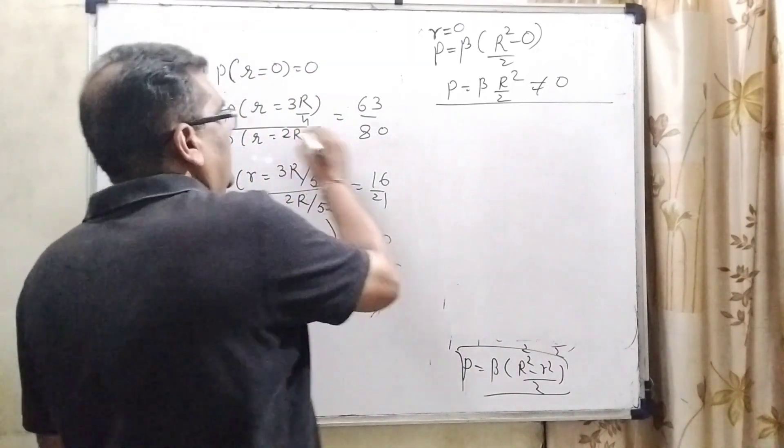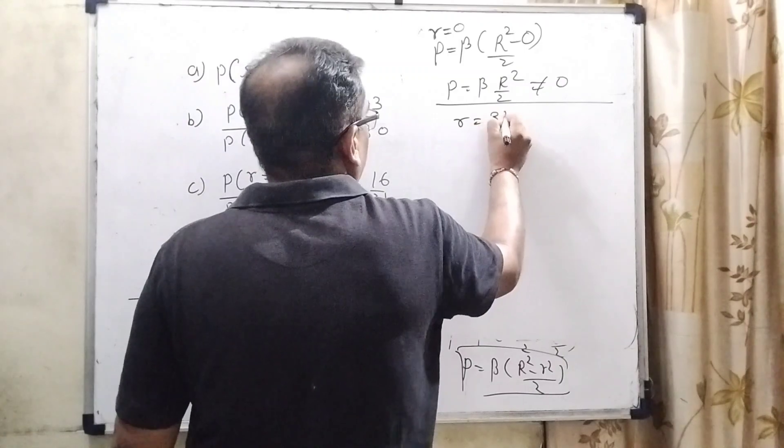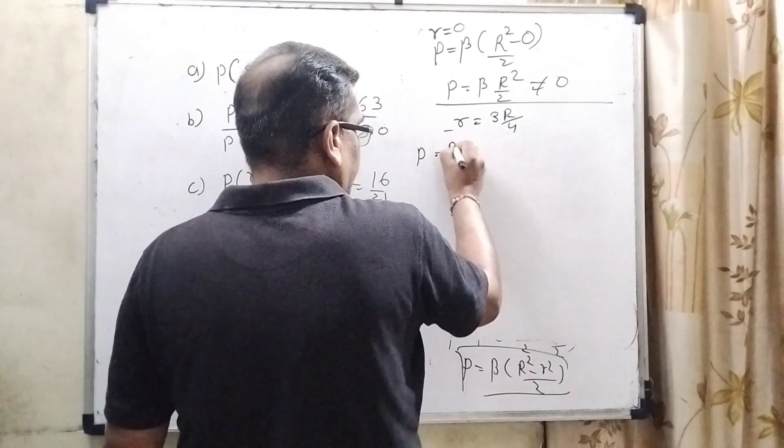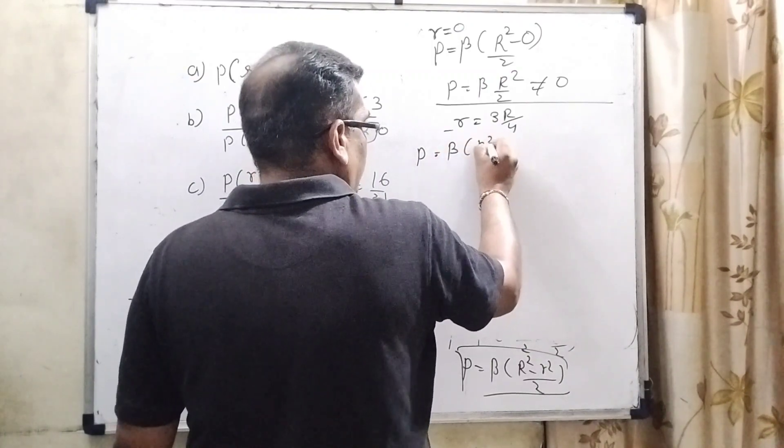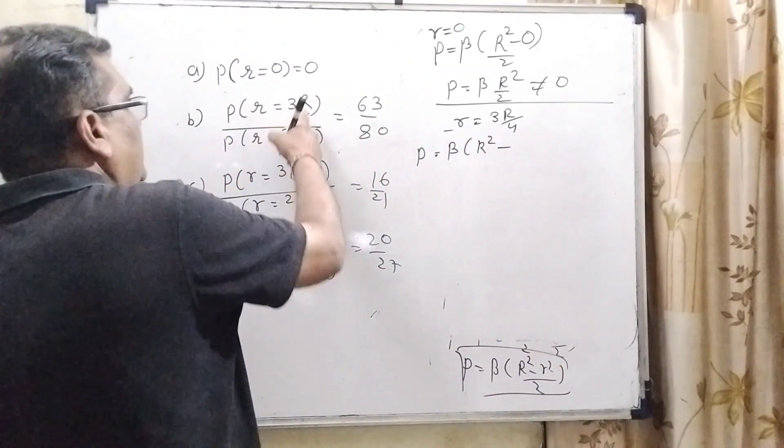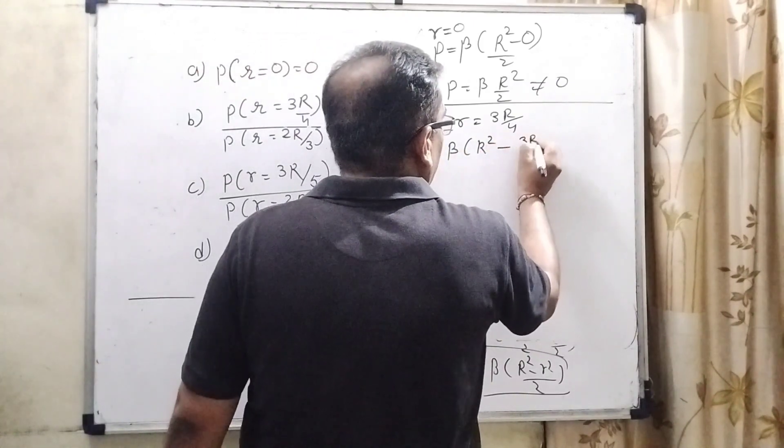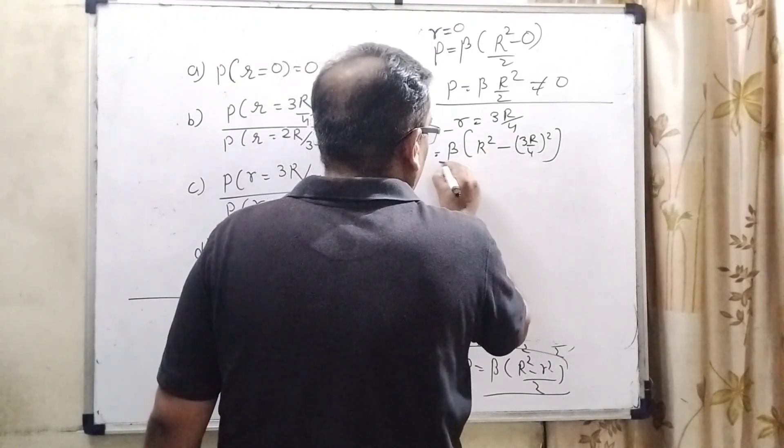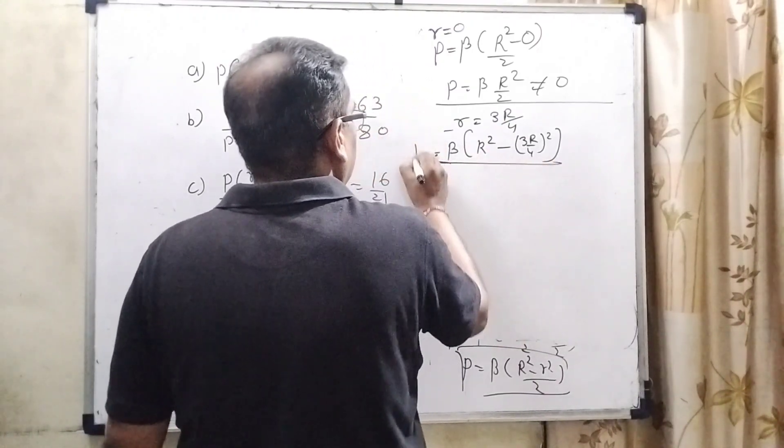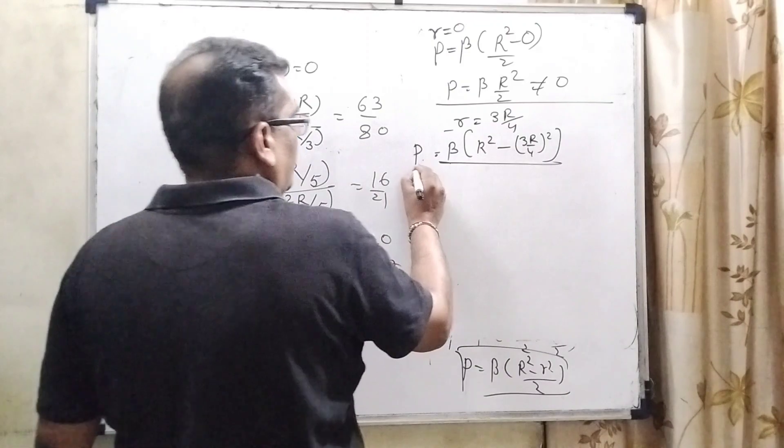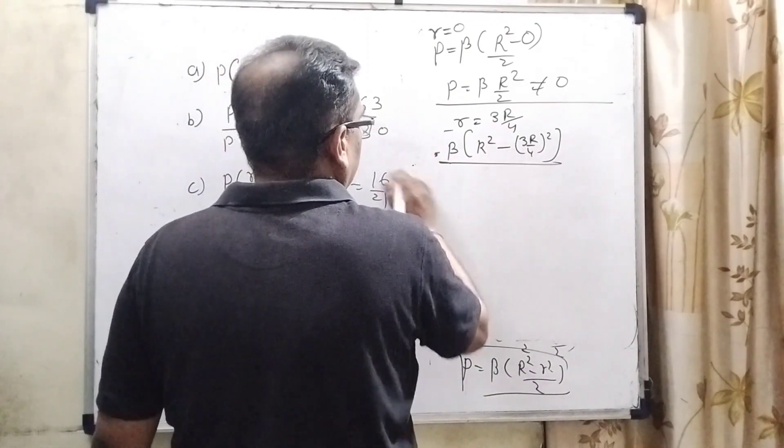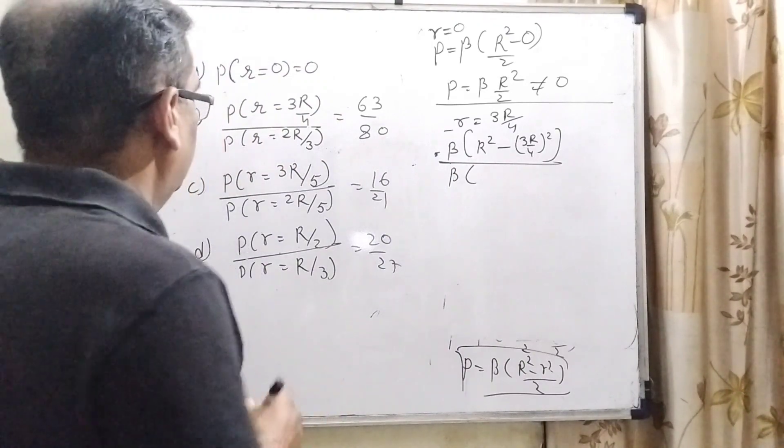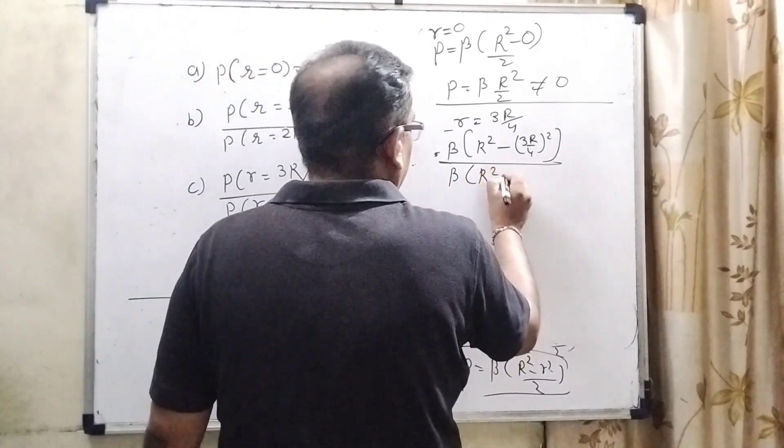Now for the second condition, r equals 3R by 4. Now substitute this value. P equals beta, R square minus r square, what is the value of small r? 3R by 4, 3R by 4 whole square. So this is the value of small r square. Again upon second value, beta, and r equals 2R by 3 here, 2R by 3 whole square.